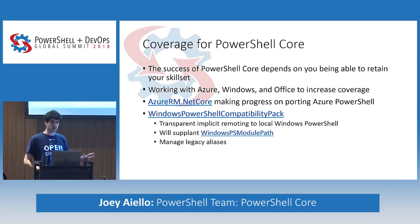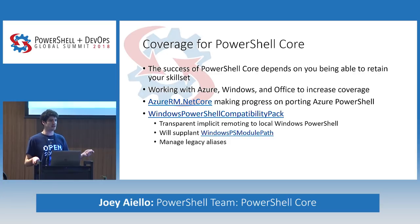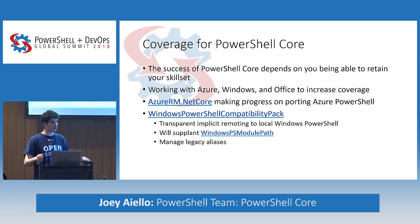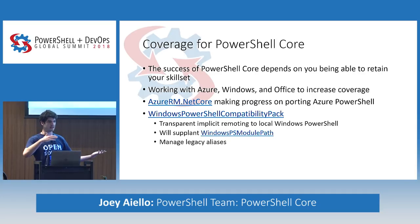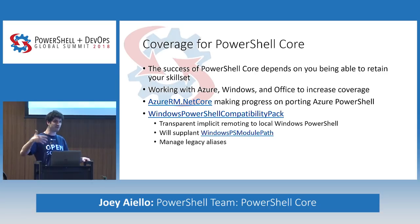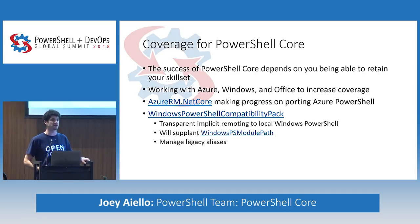We're also going to manage some legacy aliases. There's been controversy around alias removal on Linux where native binaries exist. For example, we aliased 'curl' and never thought it'd be a problem until we went to Linux. We removed that curl alias, but now Windows ships curl.exe, creating a curl.exe versus curl problem. We're trying to address this legacy alias problem by giving you abstractions to manage your aliases.